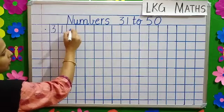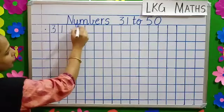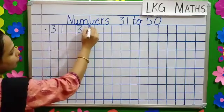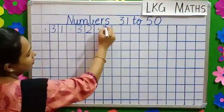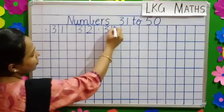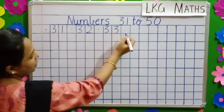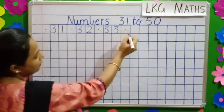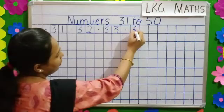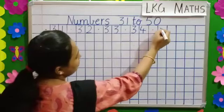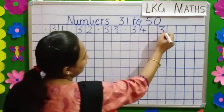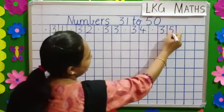Put a dot again. 3, 2, 32. Dot 3, 3, 33. Dot 3, 4, 34. Dot 3, 5, 35.